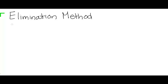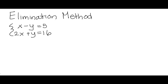Let's look at this system. We have x minus y equals 5, and the other one is 2x plus y equals 16. Our goal here is to find an ordered pair solution that will solve both of these equations. Notice that both of these are in standard form — they need to be that way, with all variables on one side and numbers on the other. You also need your x's to line up and your y's to line up, or else this just won't work.